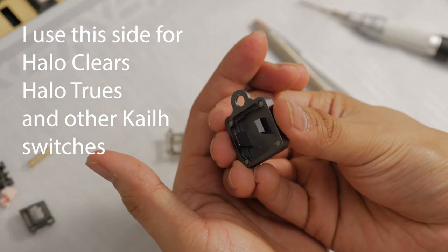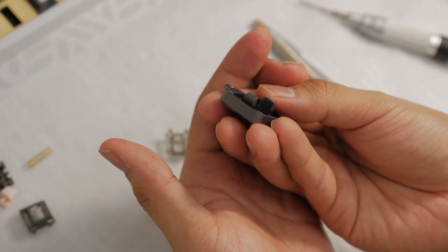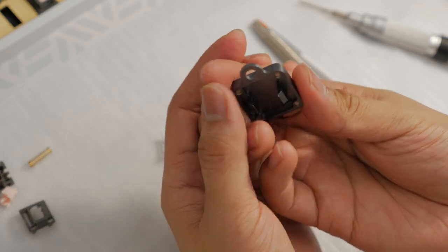A little bit tougher and a little bit easier to open switches. The other half is for kale switches. So if you're making holy pandas, you'll need something like this to open up the halo clears and halo trues.